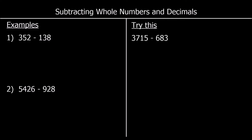In this first question, we're being asked to work out 352 take away 138. So the first thing we're going to do is line up our numbers. So we've got 352, and we're going to take away from that 138. I've lined up in columns: my ones with my ones, my tens with my tens, and my hundreds with my hundreds.